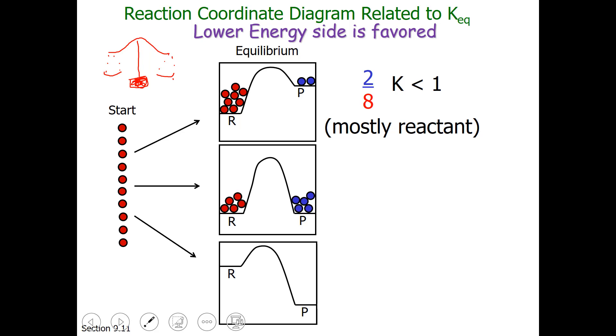For our middle diagram, it would distribute 50-50. K would be equal to 1. For our bottom diagram, it might distribute 20% reactant, 80% product. K would be greater than 1 for this diagram, and be extensive with mostly product forming at equilibrium.